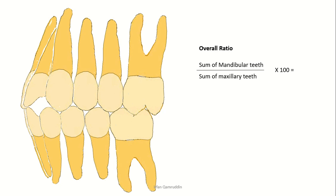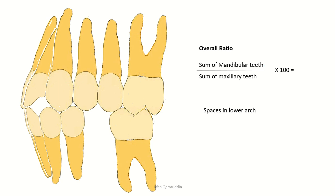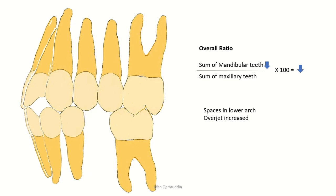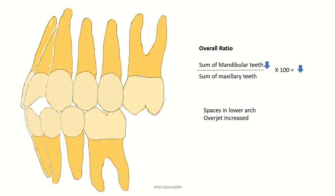Now consider the total or overall ratio. If a patient has a missing mandibular second premolar, the mandibular tooth material is reduced, resulting in a decrease in the overall Bolton ratio. There will be space in the lower arch, and if you try to close this space without moving the molar, it will result in increased overjet. If you want to keep the overjet normal and close the space, your molar will end up in a Class III malocclusion.